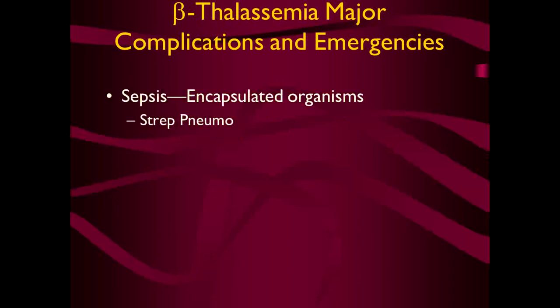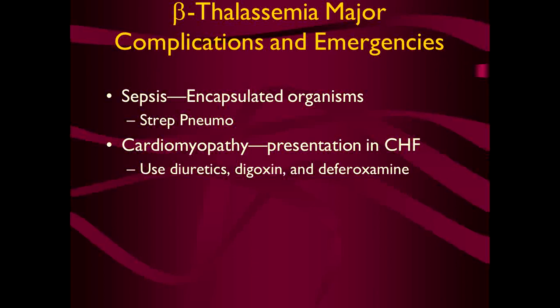Complications and emergencies: the patient may suffer from sepsis, usually with encapsulated organisms. In splenectomy cases, the four most important organisms are meningococci, streptococci, Haemophilus influenzae, and influenza virus. These attack the patient more commonly after splenectomy. Therefore, vaccinations against these four organisms are preemptively given to the patient before splenectomy.